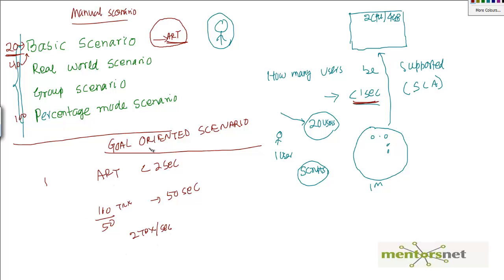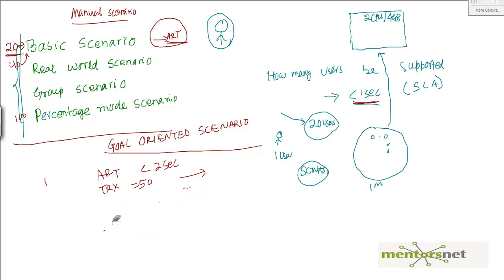So one goal I can state is that my transactions per second should equal 50. LoadRunner will then determine how many virtual users are needed to achieve that. Another metric could be throughput — for example, if I want 1 gigabyte per second throughput, how many virtual users do I need to run to achieve that? These are the kinds of goals you can define in a goal-oriented scenario.